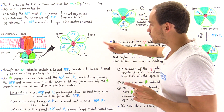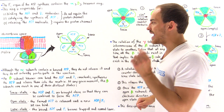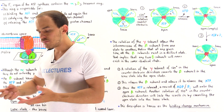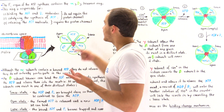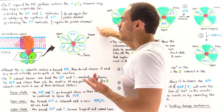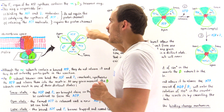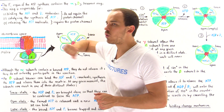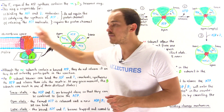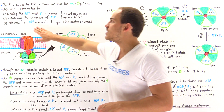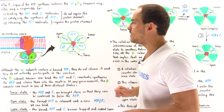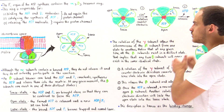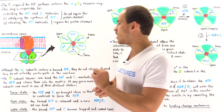On the other hand, the beta subunits play the catalytic role. They bind the ADP and orthophosphate reactants, catalyze the synthesis of ATP, and release that ATP molecule once a rotation takes place — as we'll see in more detail shortly.